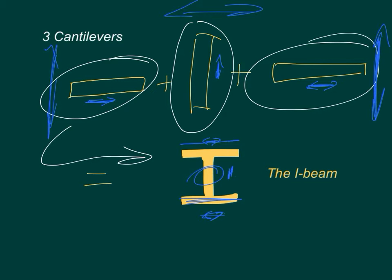So you can see, it's not going to want to bend left and right because of these top and bottom parts of the I-beam. And it's not going to want to bend up and down because of the stiff part of the vertical part of the I-beam.